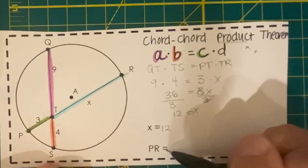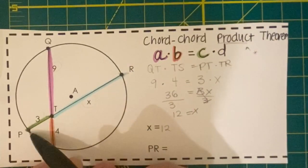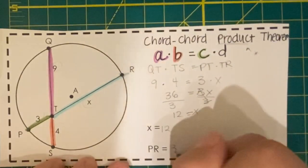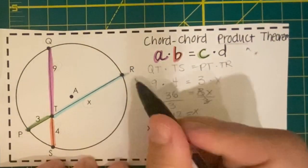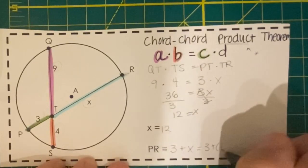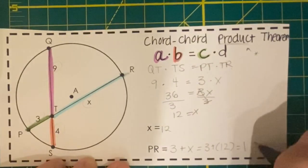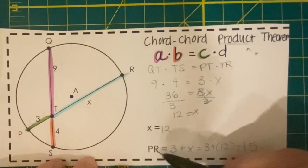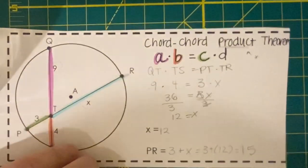Now we're also asked for the length of segment PR. PR is 3 plus x. We know x is 12, and 3 plus 12 equals 15, so PR is 15 units long.